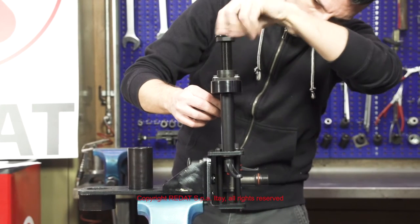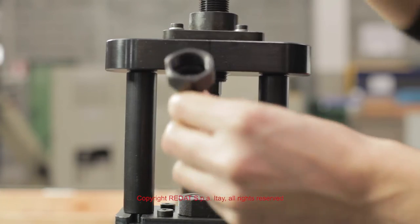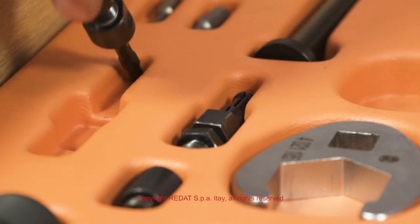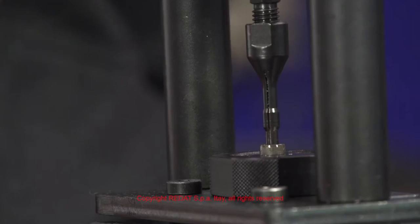At this point we remove the extraction tool and we proceed with the ring extractor. Acting on the 14 wrench it is possible to remove the split ring.